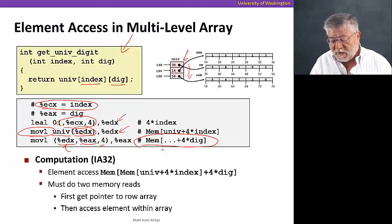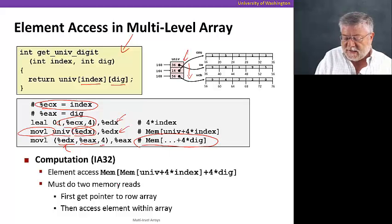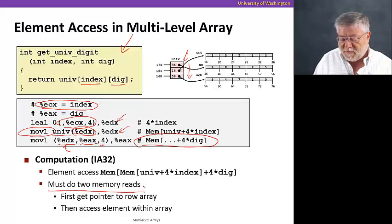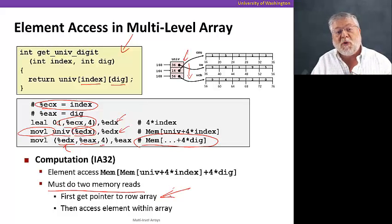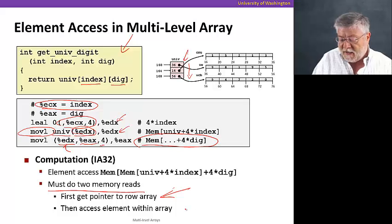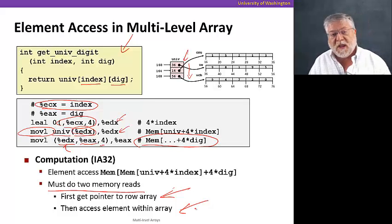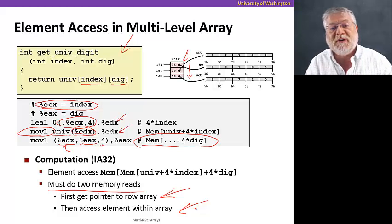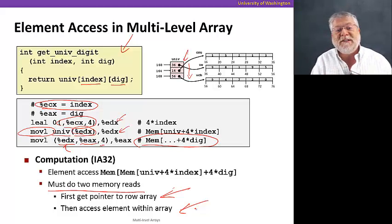So the important thing to understand here is that in this case, we must do two memory reads. First to get the pointer to the row, and then access within that row. In the multi-dimensional case, we could do that in one address computation because we had the guarantee that each row followed one after the other.